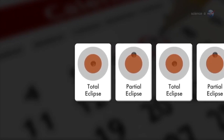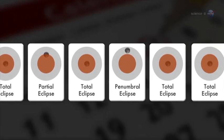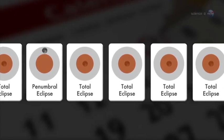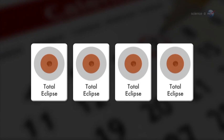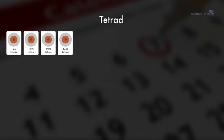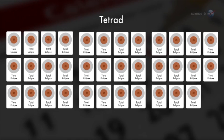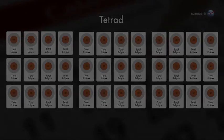Usually, lunar eclipses come in no particular order. A partial can be followed by a total, followed by a penumbral, and so on — anything goes. Occasionally, though, the sequence is more orderly. When four consecutive lunar eclipses are all total, the series is called a tetrad. During the 21st century, there are nine sets of tetrads. So I would describe tetrads as a frequent occurrence in the current pattern of lunar eclipses, says Espinak.